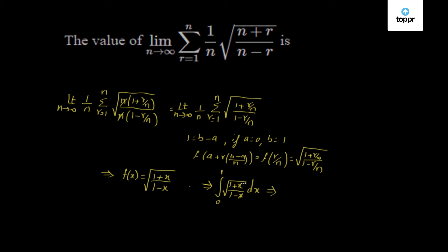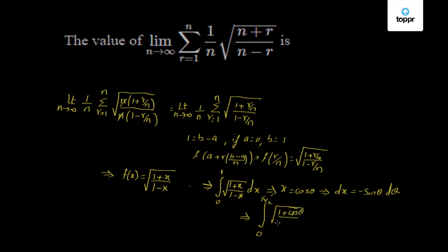Use the substitution x equals cos θ, which implies dx equals minus sine θ dθ. Using the negative sign to change the limits: when x equals 0, θ equals π/2, and when x equals 1, θ equals 0. So we can write it as the integral from 0 to π/2 of square root of (1 plus cos θ) by (1 minus cos θ) times sine θ dθ.